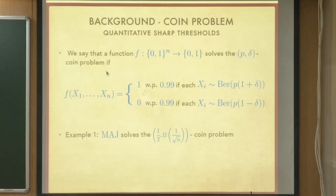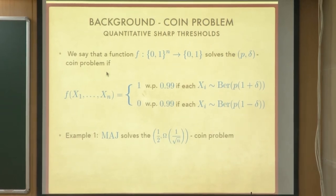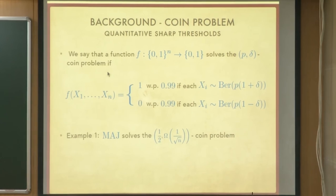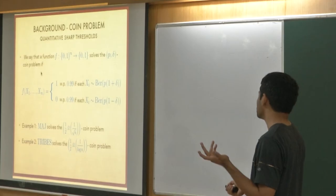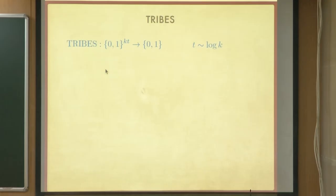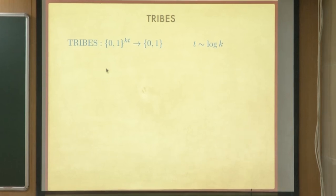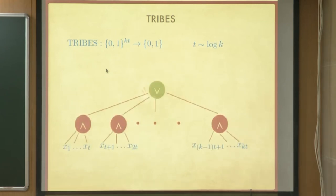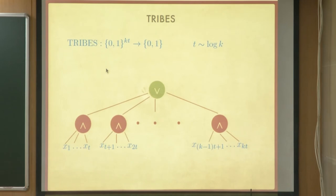You need at least a gap of 1 over root n. As the gap delta gets larger the problem becomes easier. The tribes function solves the coin problem with a slightly larger bias gap. It is a Boolean function on k*t bits where t is log k plus some constant — whatever constant makes it solve the half-comma-1-over-log-n coin problem. The tribes function is a DNF, an OR of ANDs, where all variables of every monomial are disjoint and all of the same size. It is a height-2 circuit of linear size.